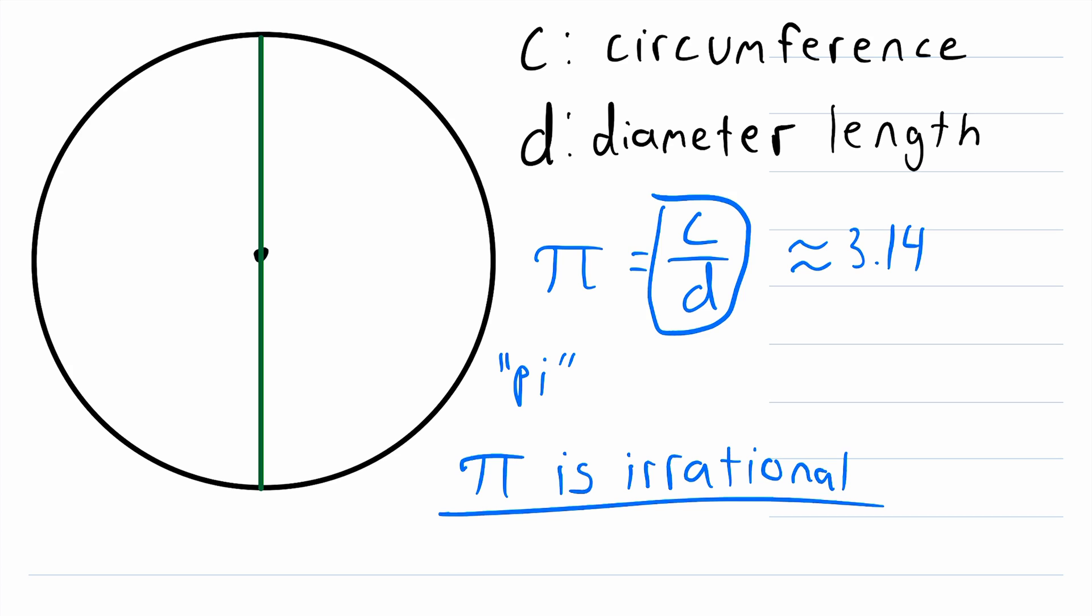So doing that, what we'll have on this side is just C, the circumference. And then that's equal to this side multiplied by D, that's just pi D. And then here we go, this is our formula for the circumference of a circle in terms of the diameter. If you know the diameter length of a circle, just multiply it by pi, and that is your circumference.